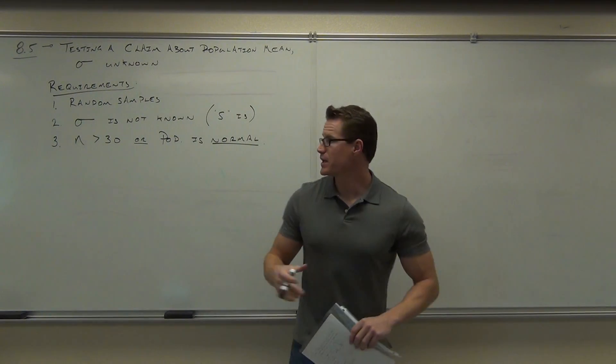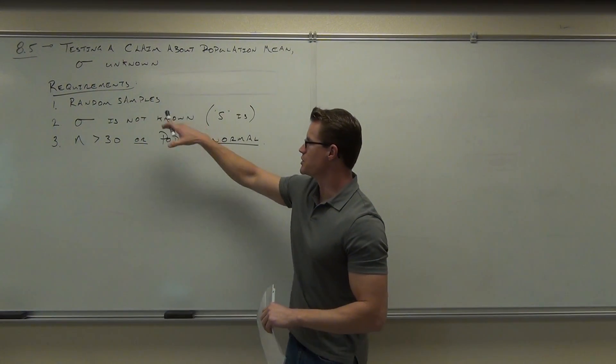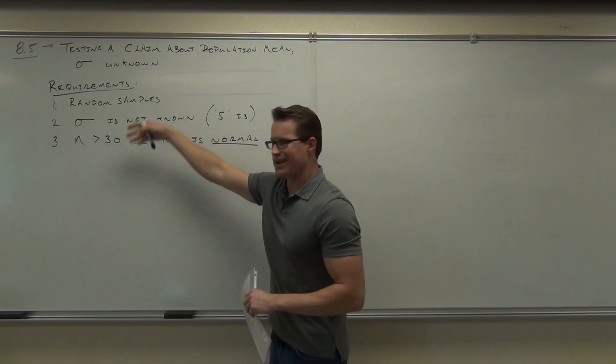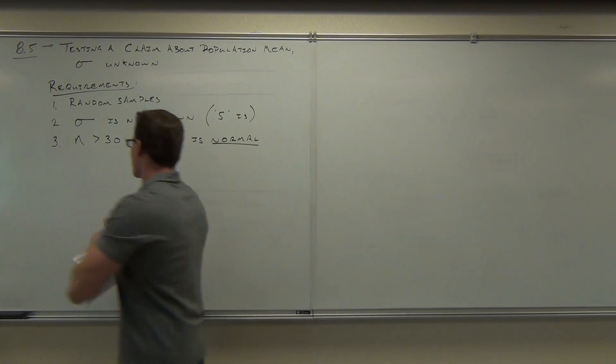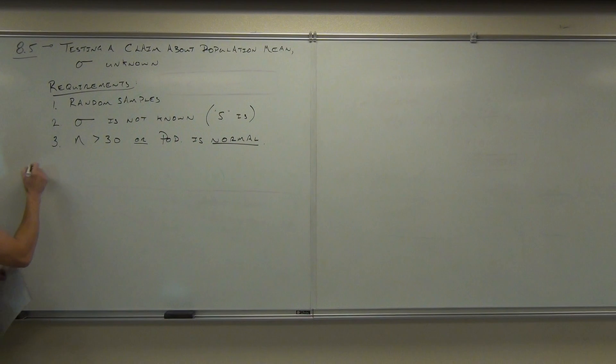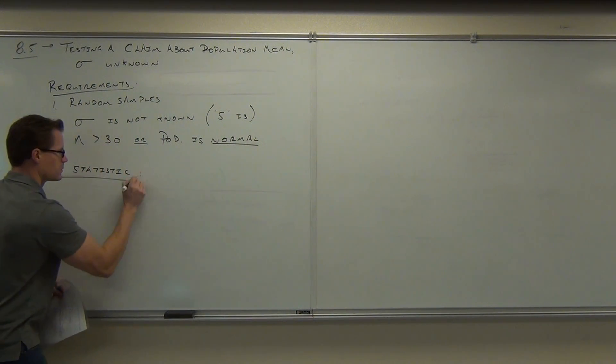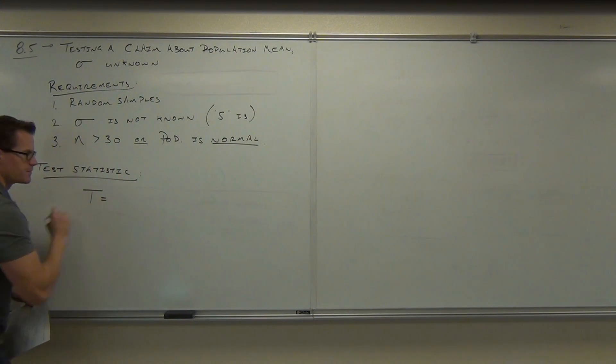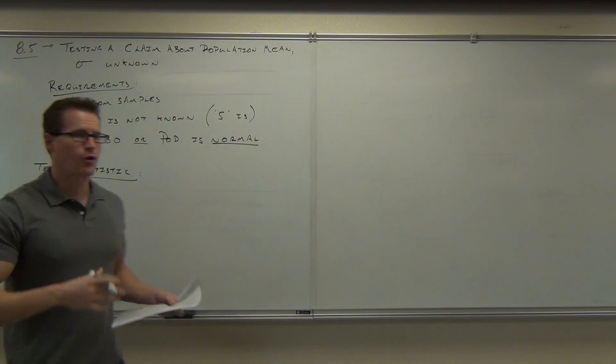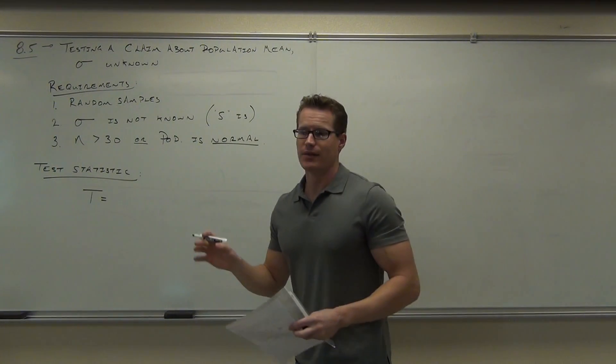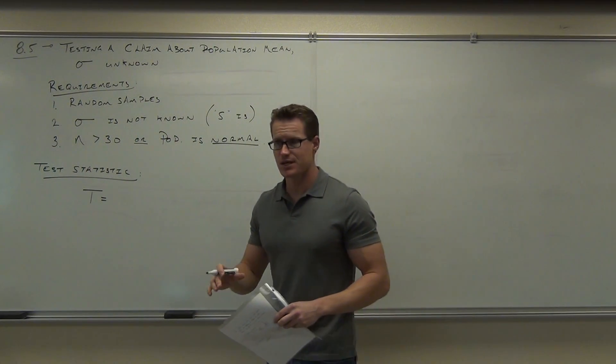If these are the cases, if we don't know sigma, but we do know S, and everything else is the same as the last section, then we're not going to have a Z test statistic anymore. Our test statistic is going to be a T. Now, fortunately for us, we've already calculated this. We should know how to do it. It's not too bad.